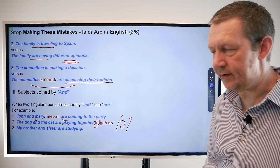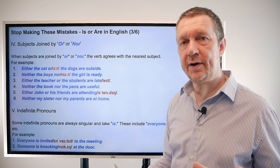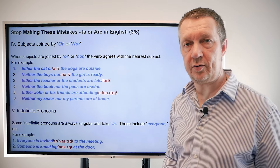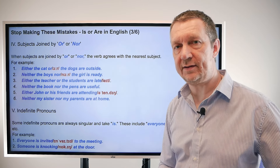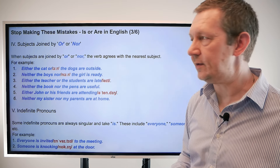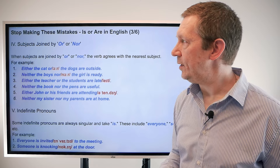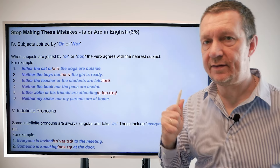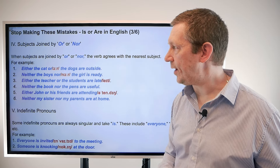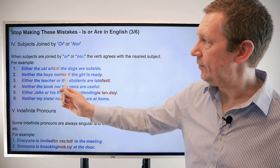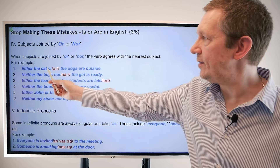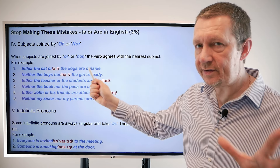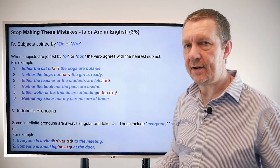Now we're going to look at subjects joined by 'or' or 'nor.' When they're joined by 'or' or 'nor,' the verb agrees with the nearest subject. For example: 'either the cat or the dogs are outside' — 'dogs' is the plural form closest to the verb, which is why we use 'are.'